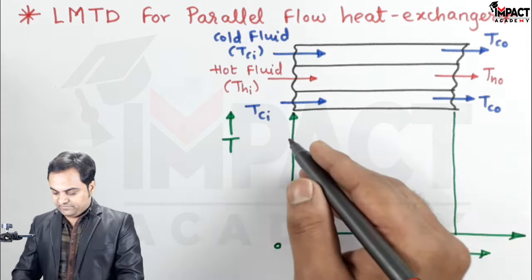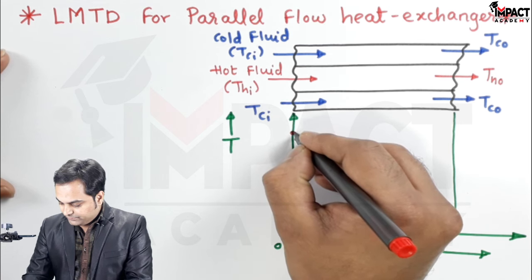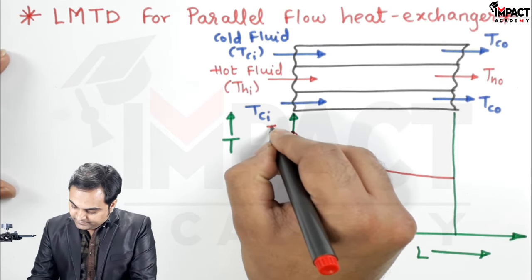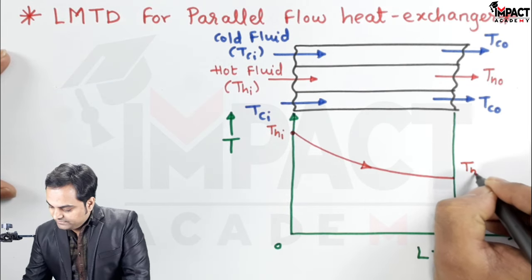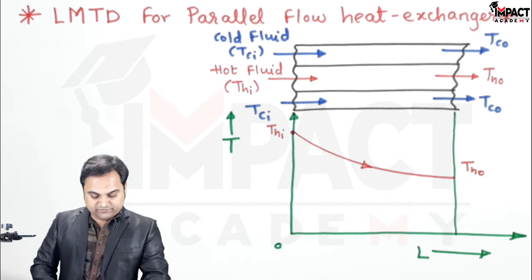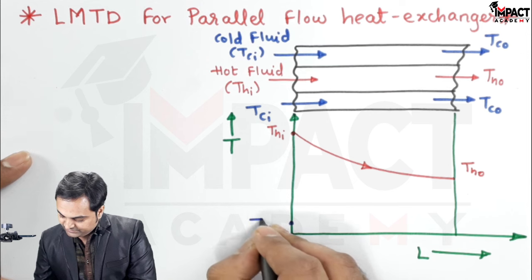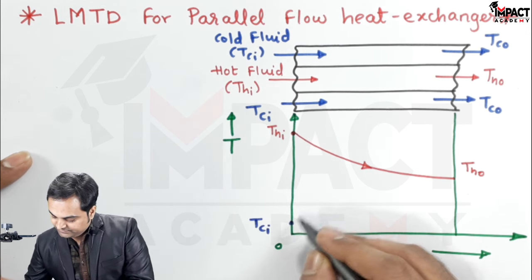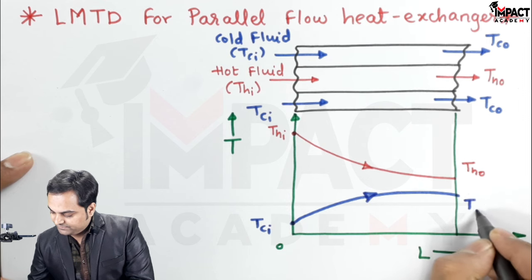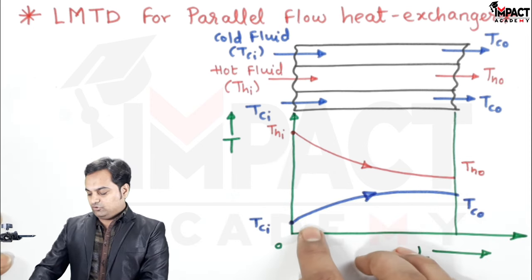The hot fluid enters from the left side with a greater temperature at the start, and the temperature goes on continuously reducing along the length of the heat exchanger, entering at THI and leaving at THO. For the cold fluid, it enters at a lower temperature TCI, and the temperature goes on continuously increasing along the length, with exit temperature TCO.